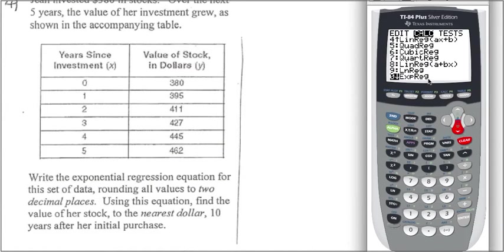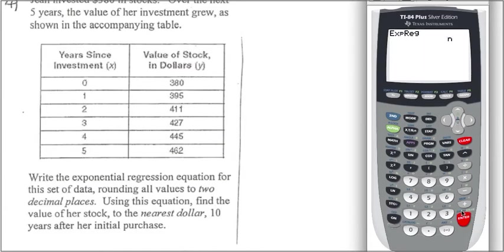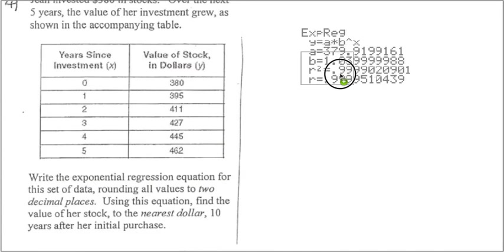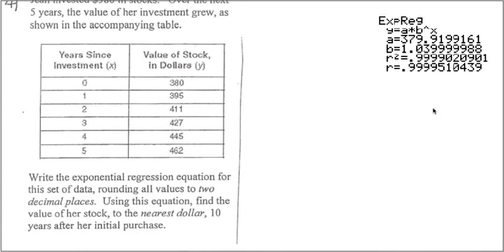Right over there. So, that's the value that we end up getting over here. Then our equation is y equals a was 379.92. And then, times b is the base, which is 1.03 or 0.04, and then to the x power. That's the expression that we end up getting.